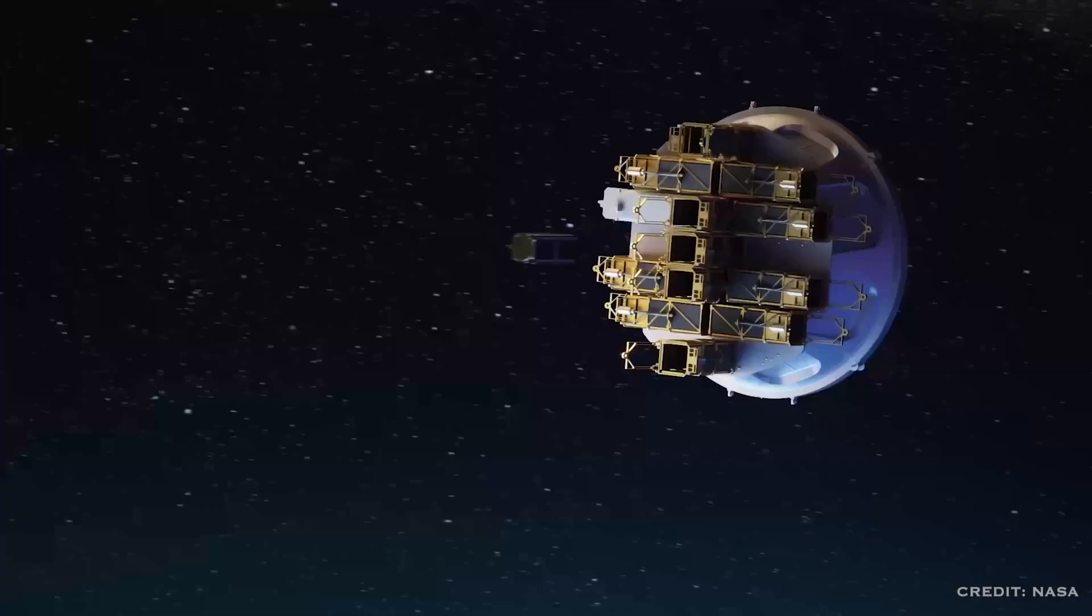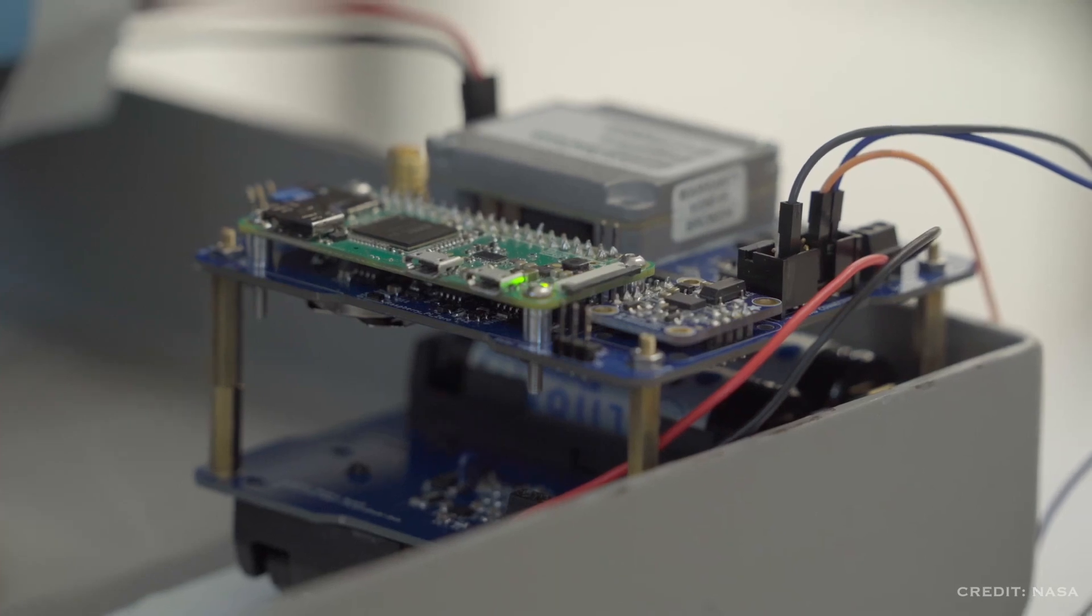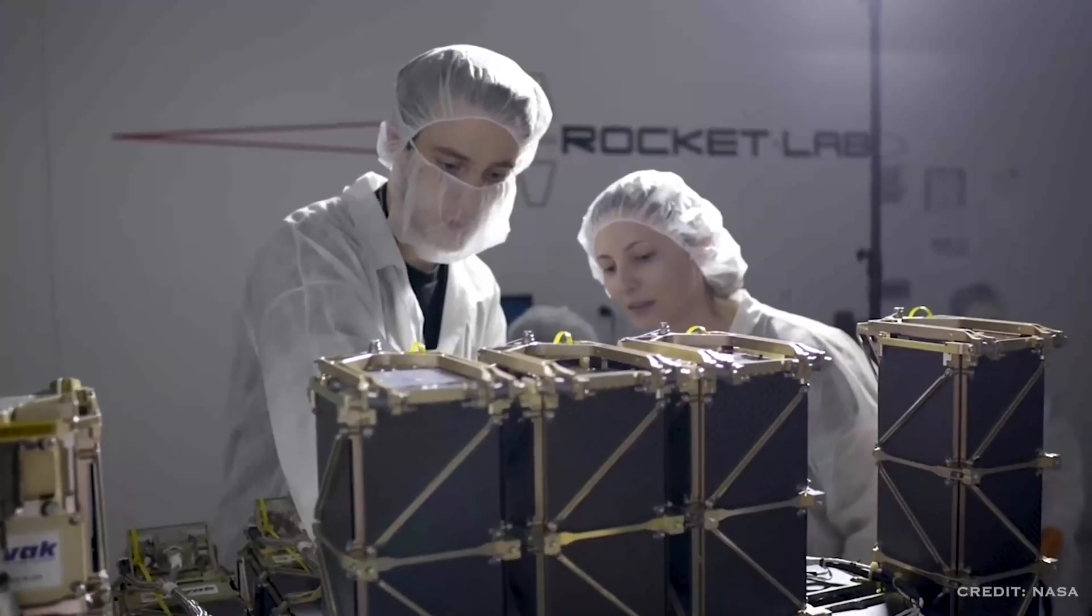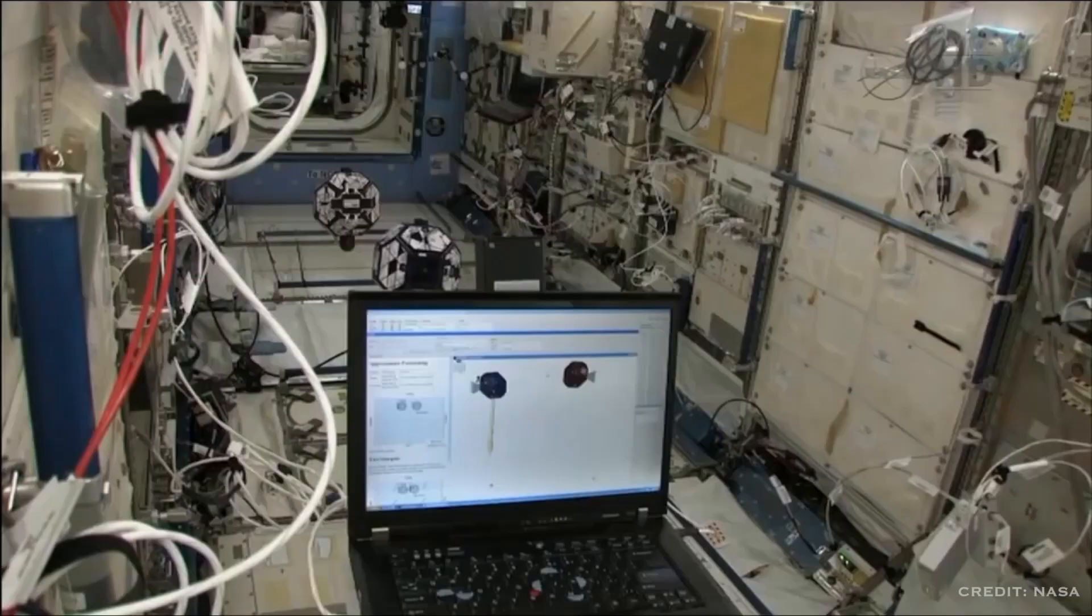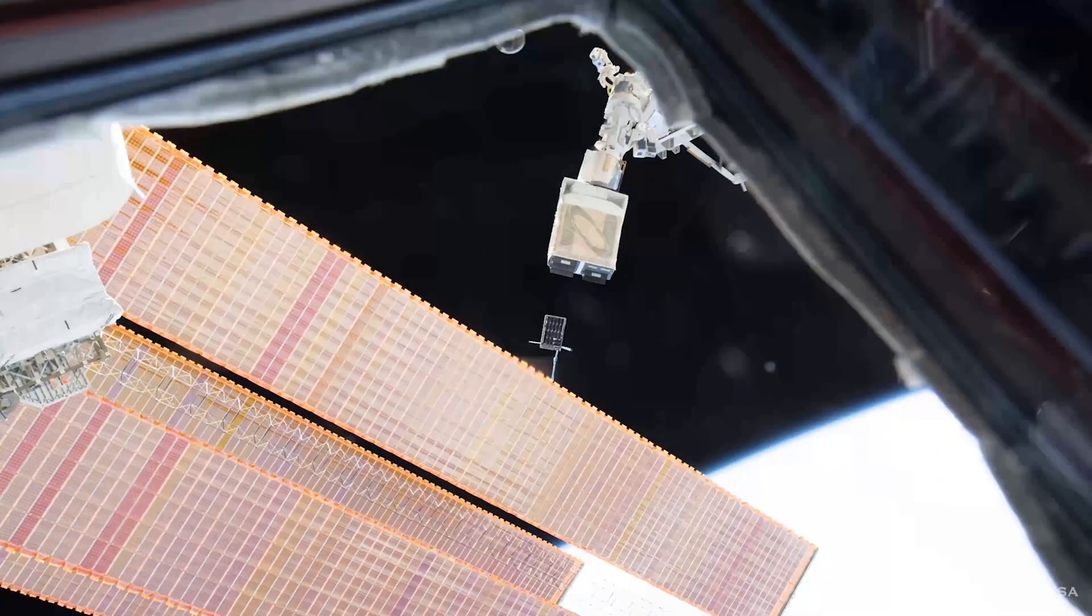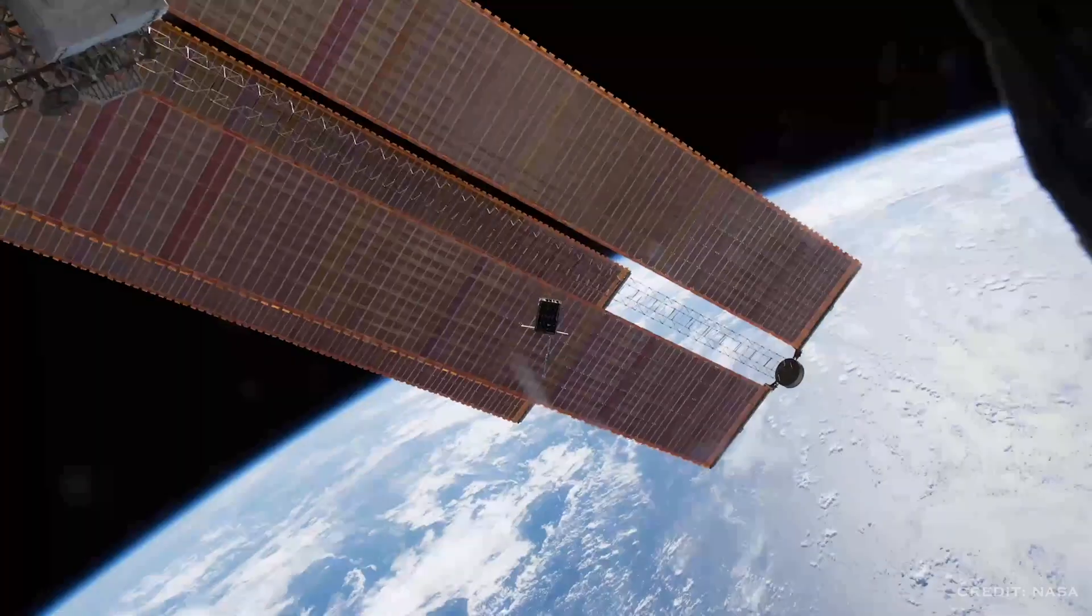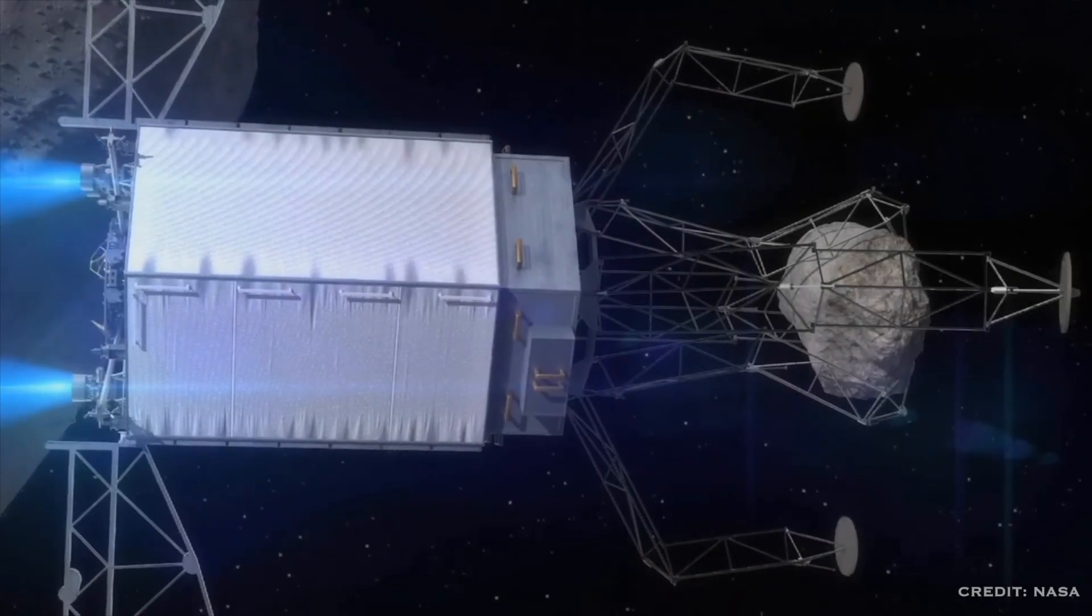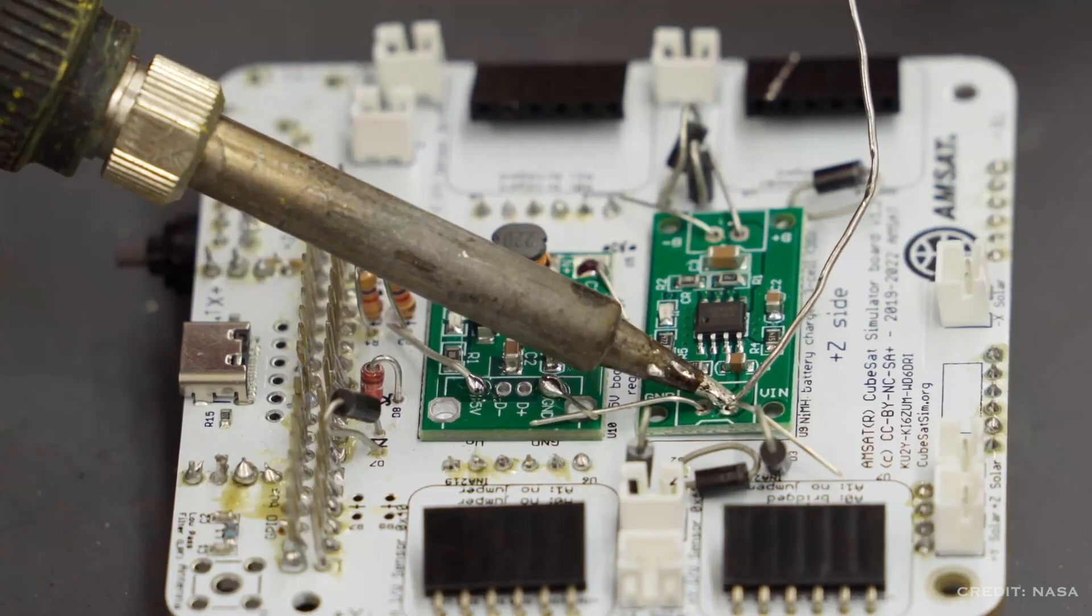CubeSats, already revolutionizing access to space, are being enhanced with nanoparticle sensors capable of detecting individual molecules. These miniature laboratories could analyze the composition of distant planets and moons with unprecedented accuracy, all at a fraction of the cost of traditional missions.